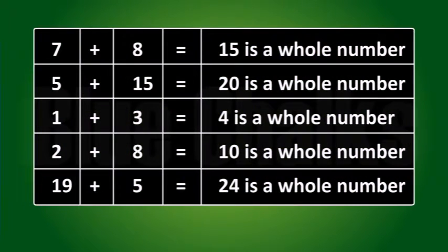Take any two whole numbers and add them. Your addition may be like this. You will find that addition of two whole numbers is always a whole number. Hence, we say that sum of any two whole numbers is a whole number.